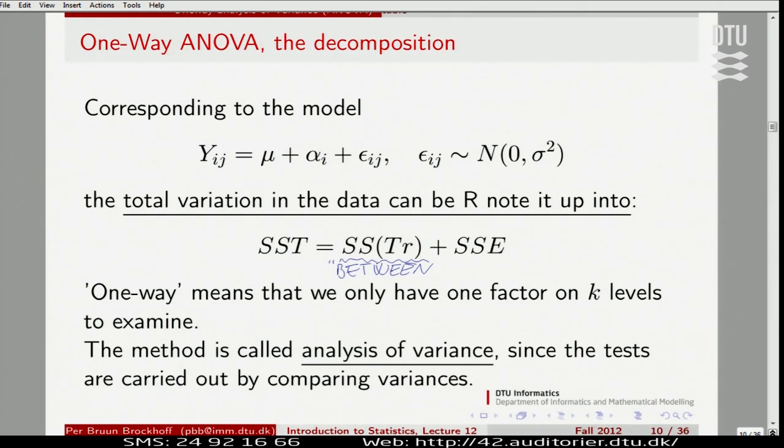So this is the between information and then we have the within, the within group information. That is the fluctuation, the variability within groups. I took that from each three groups and pulled it together in one number, the SSE number.